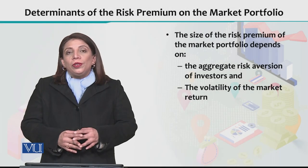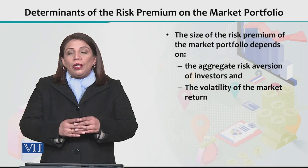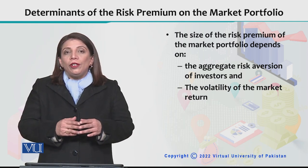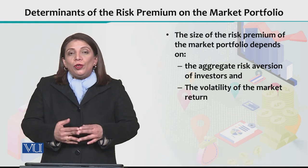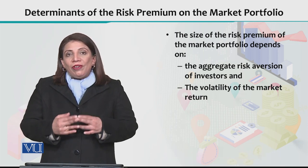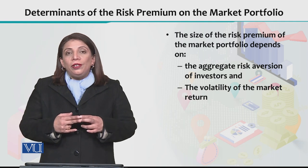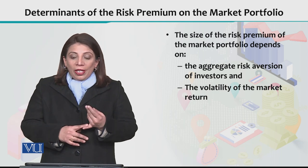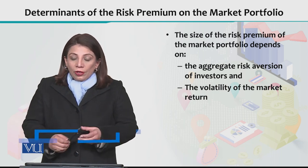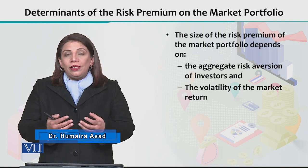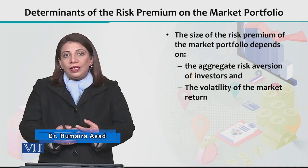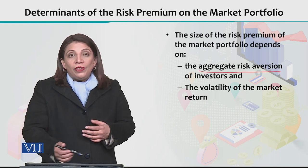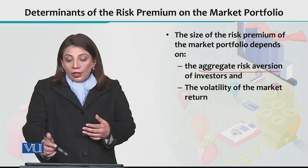We were talking about the risk premium. Now we are going to discuss what are the determinants of risk premium on a portfolio. Together, there are two important factors that help us in deciding what is going to be the risk premium. The first factor that influences the value of the risk premium is the overall aggregate level of risk aversion of the investors.